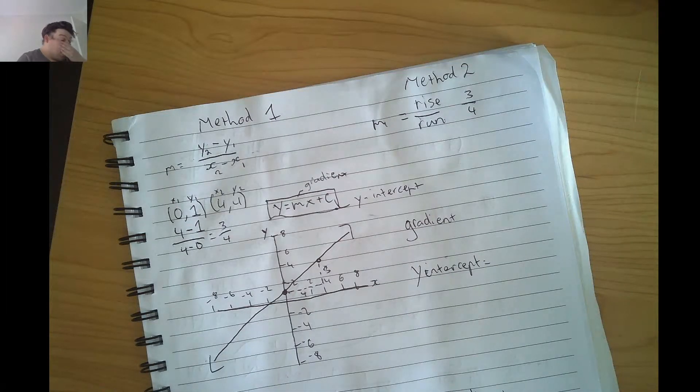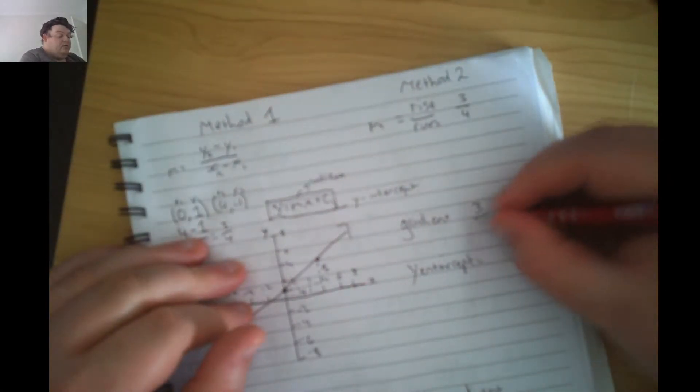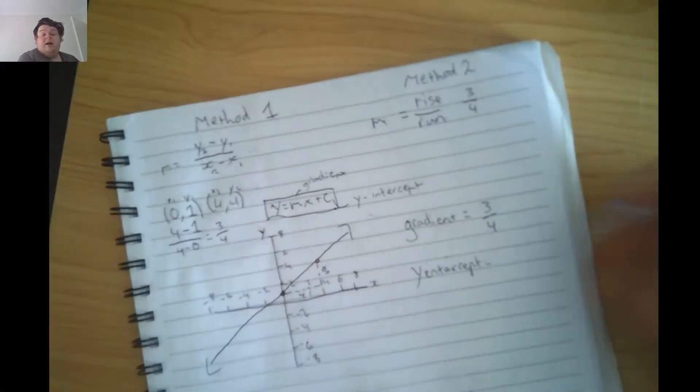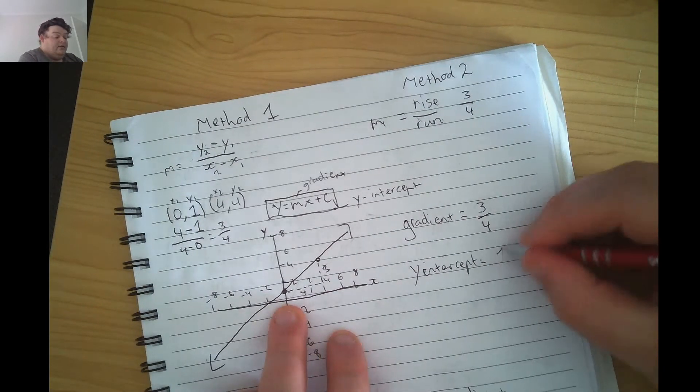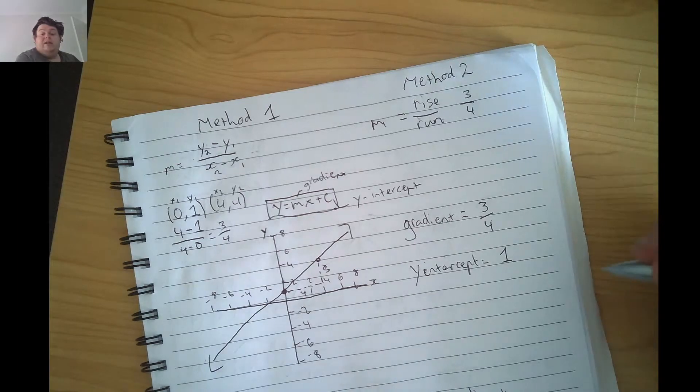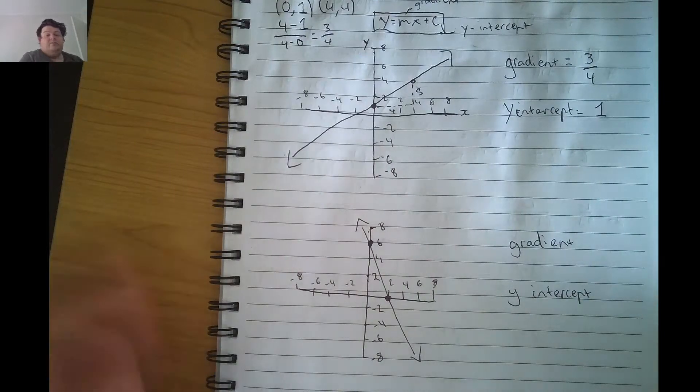So in this case, our gradient is 3 over 4. Our y-intercept is where it crosses the y-axis, and we already know that. It's at 1. So that's our gradient and y-intercept for this one. But let's look at a different example.